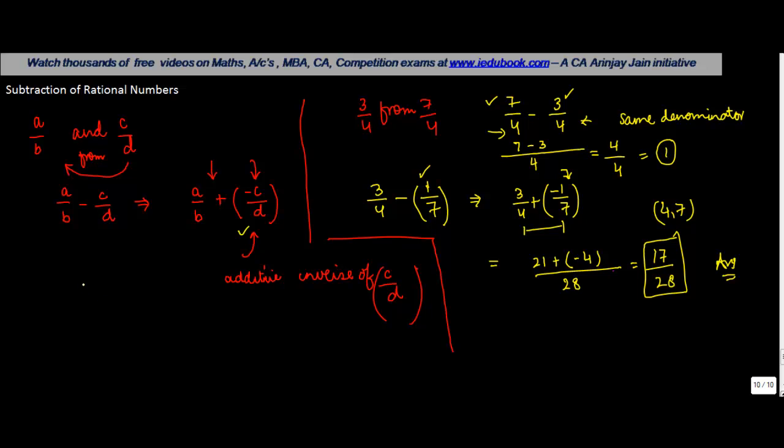Let's take one more example. Suppose you have 1 upon 9 minus 2 upon 3. Now this can be written as 1 upon 9 plus minus 2 upon 3. Take the LCM of 9 and 3. You will get 9.